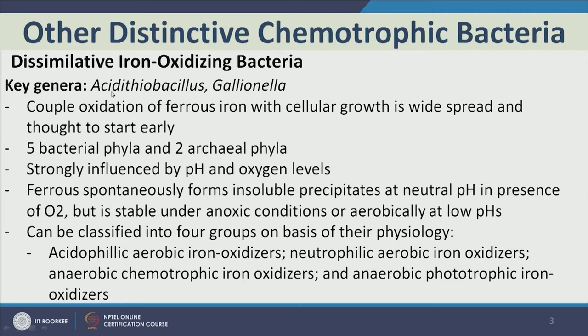Iron can also be oxidized, so we have dissimilatory iron-oxidizing bacteria. The key genera are Acidithiobacillus and Gallionella. They are found within five bacterial phyla and two archaeal phyla — these are just key genera, there are many more. If you hear Gallionella, iron-oxidizing bacteria should come to mind. They couple oxidation of ferrous iron with cellular growth and are believed to have been one of the first metabolic pathways when life was evolving on earth.